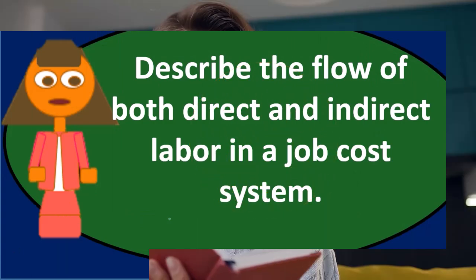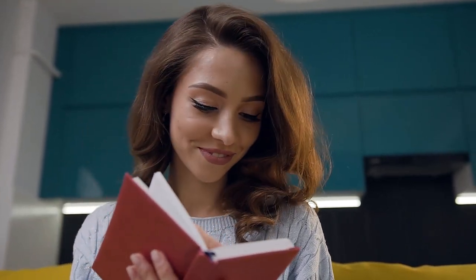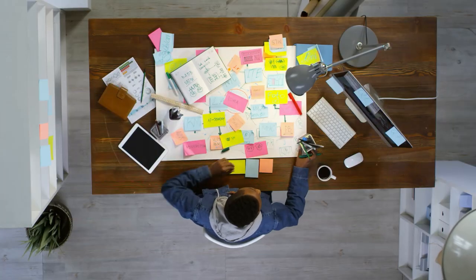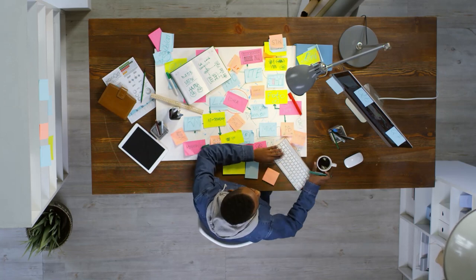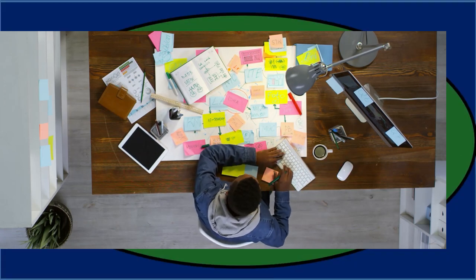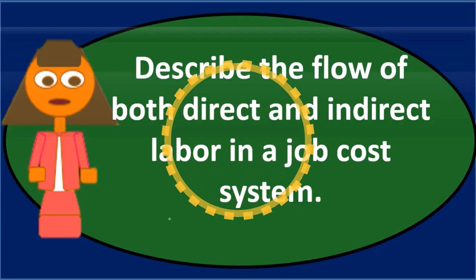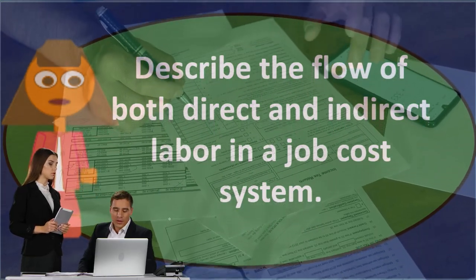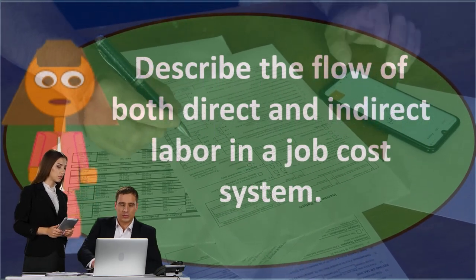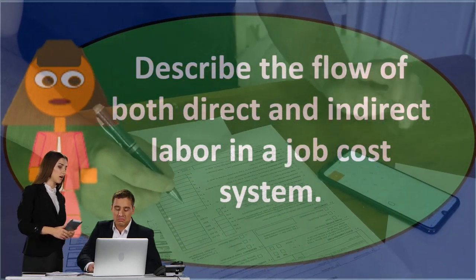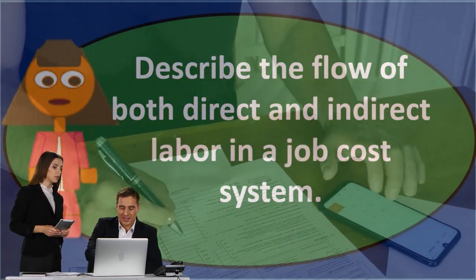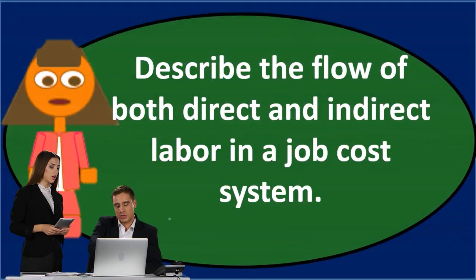So indirect labor goes into overhead, and then it's applied out using some kind of allocation factor. The key difference between direct and indirect is that indirect can't go directly to work in process — it has to go into overhead first. It's then allocated to work in process using an estimated allocation method, along with other overhead costs.